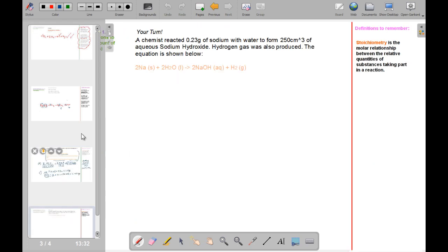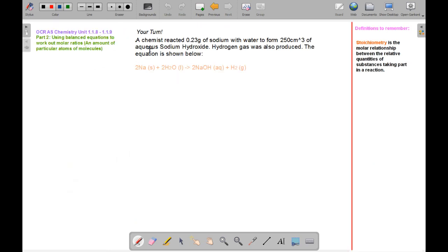Now I'll give you one to look at. A chemist reacted 0.23 grams of sodium with water to form 250 cm3 of aqueous sodium hydroxide. Hydrogen gas was also produced. The equation is shown below: 2 sodium plus 2 water gives 2 sodium hydroxide and hydrogen.